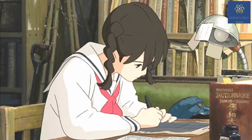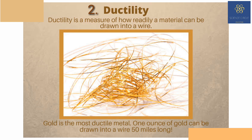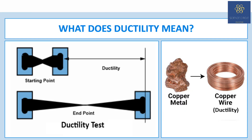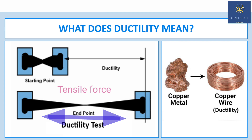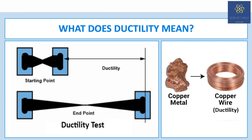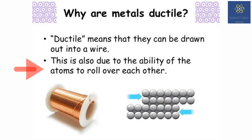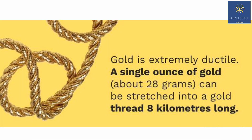The second property is ductility. It is a physical property of metal which means if we pull the metal it will stretch rather than break. This deformation is possible when the metal undergoes tensile stress. This property is used to make thin wires. The degree of ductility occurs due to metallic bonds. Copper and steel can be drawn into thin long wires. Gold is the most ductile metal.